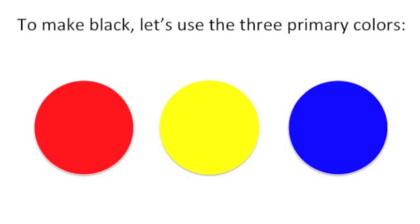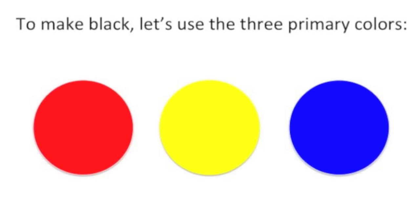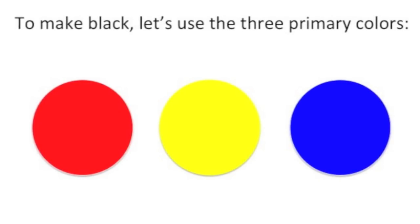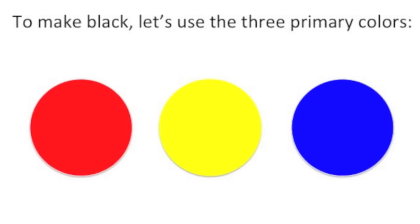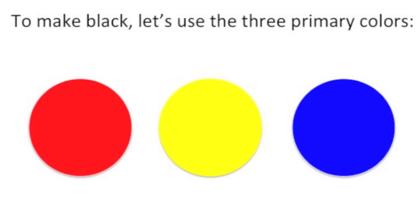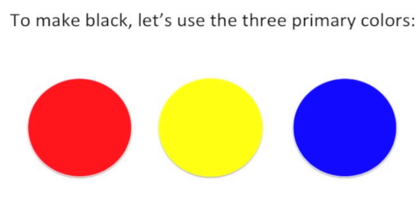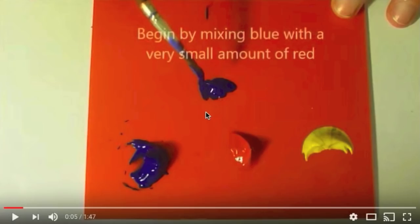I'll link the video down below as well. Here is a video of an artist making black out of the three primary colors. I really want you to pay attention to how much blue he adds versus how much yellow he adds. Remember, red is neither cool nor warm, so we really want to take a look at how cool or warm black is - therefore how much blue versus how much yellow he adds to the color. Let's watch the video now.